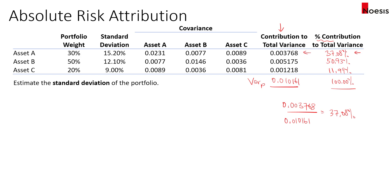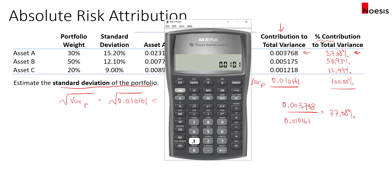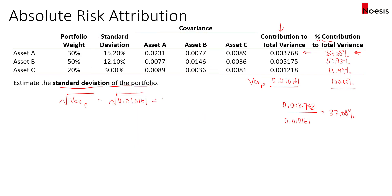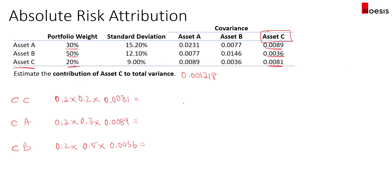They could ask you to calculate the absolute contribution or the percentage contribution, so just be wary of that. For calculating the standard deviation of the portfolio, it's just the square root of the portfolio variance. I built everything one by one just to give you a complete picture. Of course, in the exam they may give you the covariance matrix as a starting point, or give you the portfolio variance or standard deviation instead of asking you to calculate it. This is just to give you a very complete picture of how the absolute risk attribution is done.